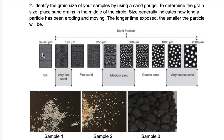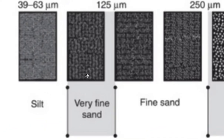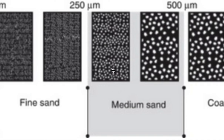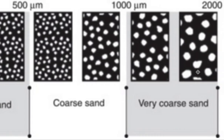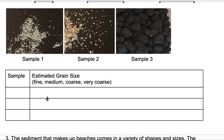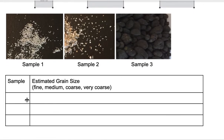These are big particles and these are small particles. The very tiny, tiny little grains are silt. Then you have very fine sand, fine sand, medium sand, coarse sand which is a little bit bigger, and very coarse sand which is much bigger. You're going to take your three samples, look at them, and determine what size they line up with — fine, medium, coarse, or very coarse.